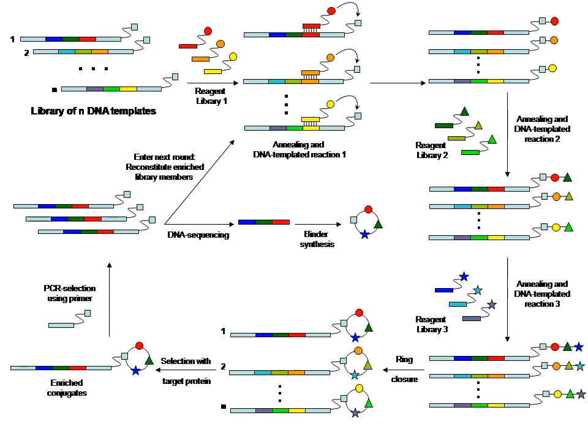DNA templated synthesis and Yoctoreactor technology require the prior conjugation of chemical building blocks to a DNA oligonucleotide tag before library assembly, therefore more upfront work is required. Furthermore, the DNA-tagged building blocks enable the generation of a genetic code for synthesized compounds and artificial translation of the genetic code is possible — that is, the building blocks can be recalled by the PCR-amplified genetic code, and the library compounds can be regenerated.